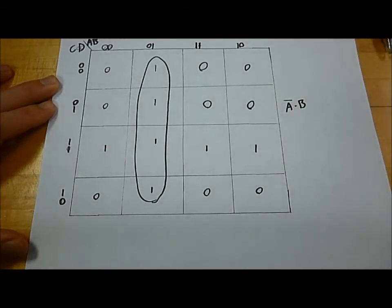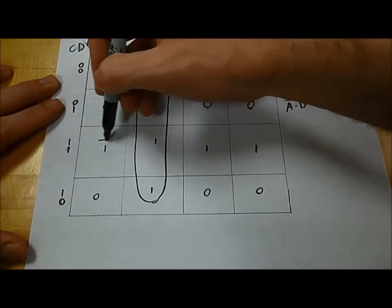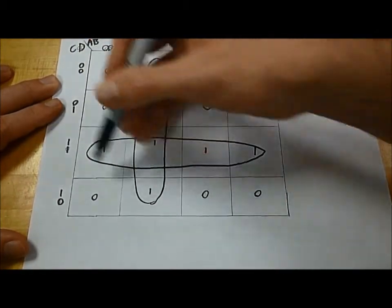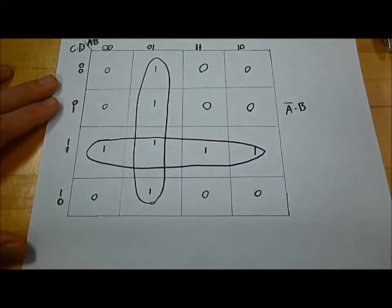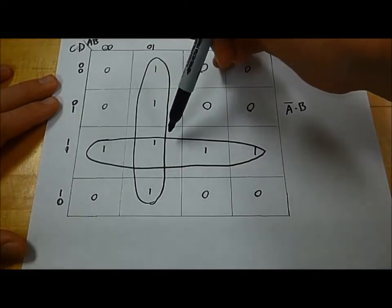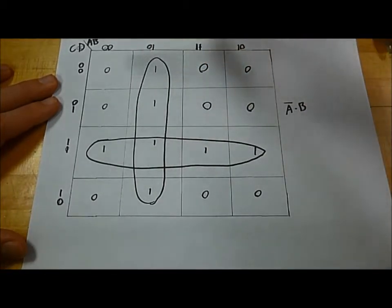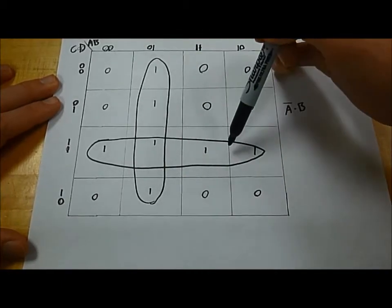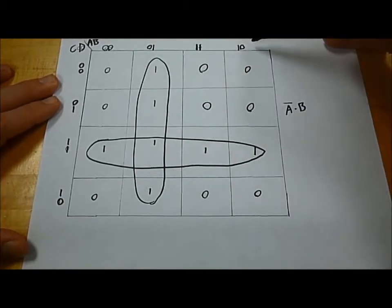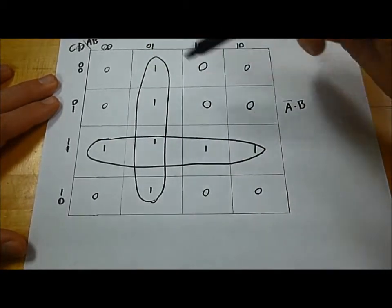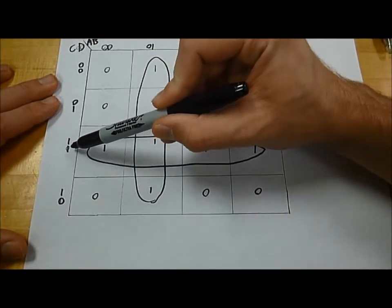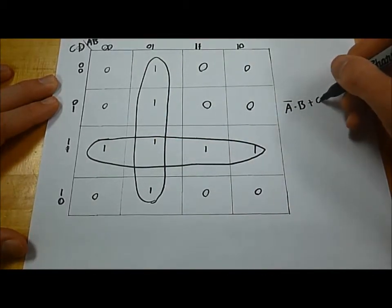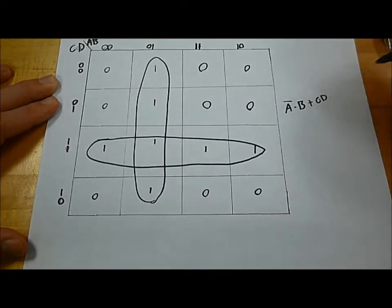Now, let's look at this row down here. If we circle this row, and our Karnaugh map groupings are allowed to overlap, that's very important. If we look at this row, we see that here, A and B don't affect the output, because they go through all of their possible values, and the output is still 1. And for this, we have C and D must be 1. So, we can write OR, C and D.